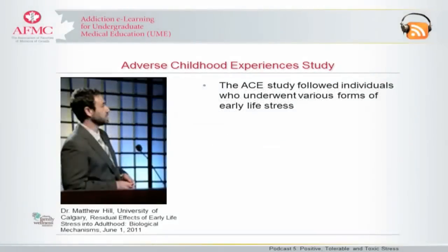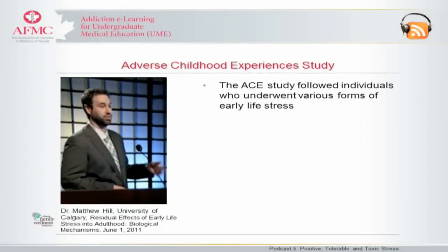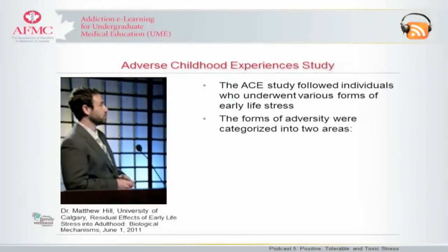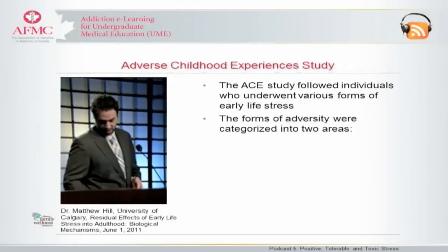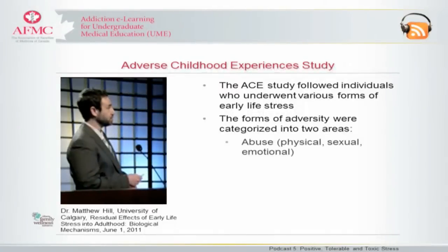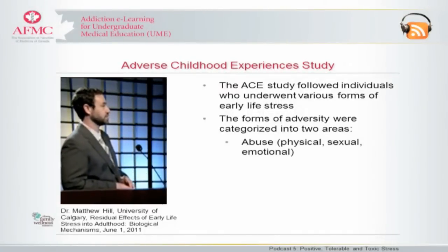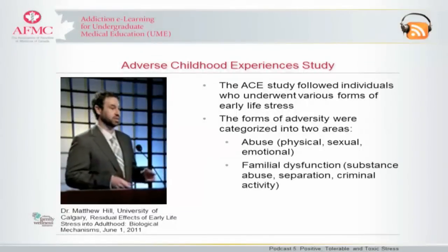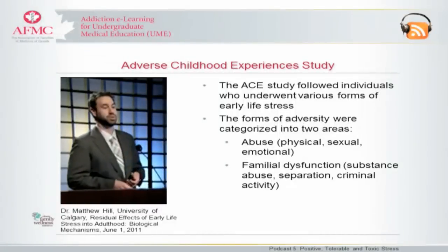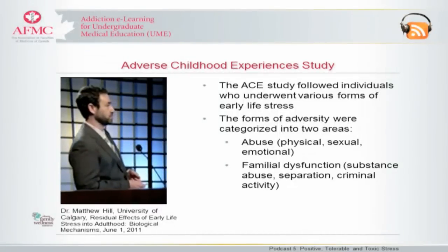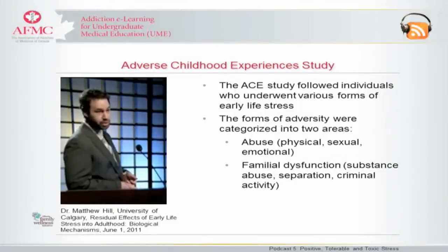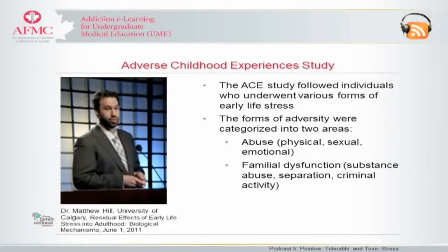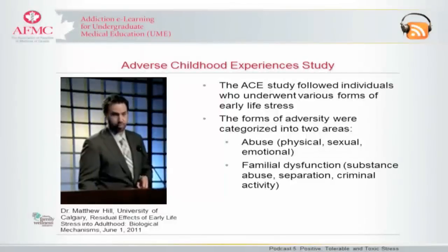The ACE studies followed individuals who underwent various forms of early life stress through retrospective analysis. The two forms of adversity were broadly categorized into two areas: abuse, which fell into the umbrella of physical, sexual, and emotional, as well as familial dysfunction — things like a household member with substance abuse, a parent in jail, a parent who was depressed, or parents undergoing a divorce.